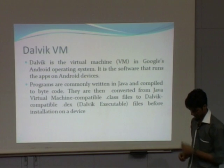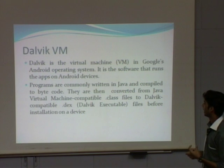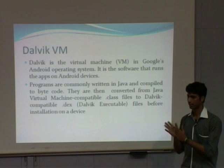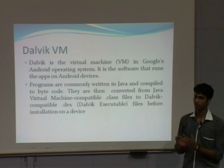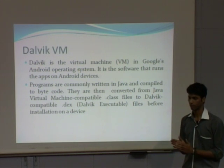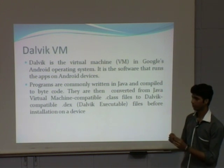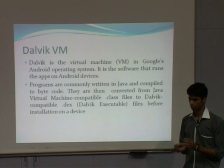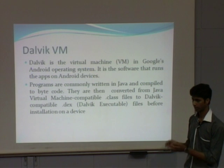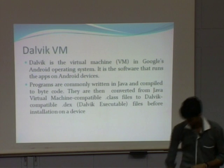Now, what is DVM? It is a virtual machine used by Google and it runs on Android devices. The Dalvik virtual machine is similar to the Java virtual machine, but the difference lies in the fact that it uses a .dex file as its executable while the JVM uses Java bytecodes. First, we compile our Java program to get a .class file, and then using a tool named dx we convert that class file into a .dex file, which is used as an executable to run an application.